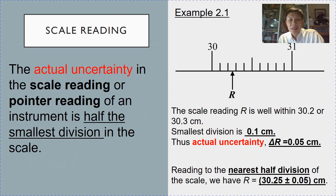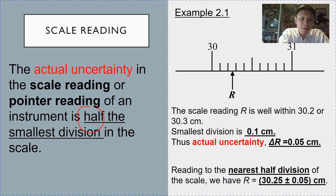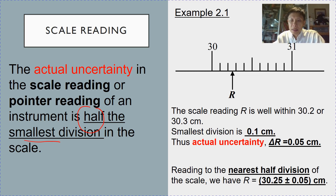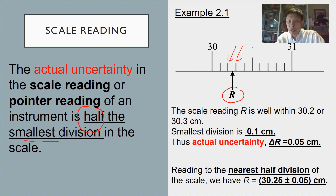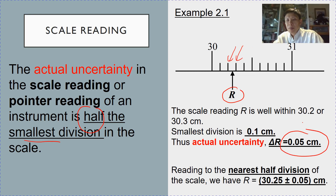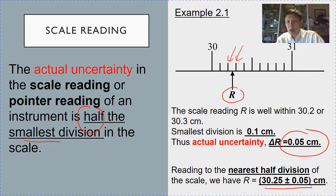Now we look at how to estimate the actual uncertainty in readings. For a scale reading, which is a single reading, the uncertainty is estimated to be half the smallest division. For example, in example 2.1, the reading r is between 30.2 and 30.3, so the smallest division is 0.1 and half of it is 0.05. Expressing r as 30.25 ± 0.05 means r lies within the range of 30.2 to 30.3.